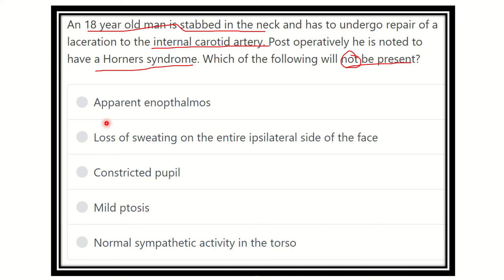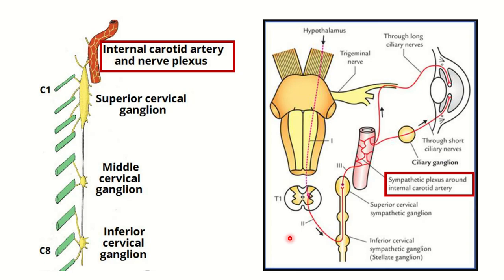Here we can see the options are: apparent enophthalmos, loss of sweating on the entire ipsilateral side of the face, constricted pupil, mild ptosis, and normal sympathetic activity in the tarsion. So let's see the picture first.